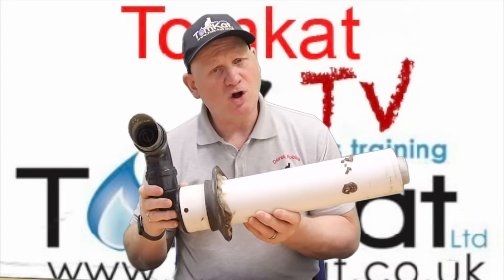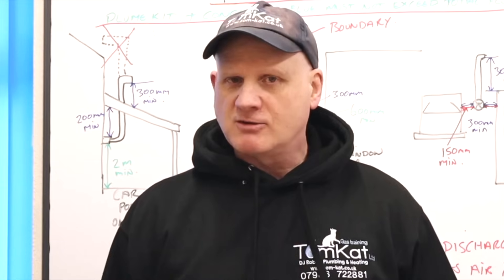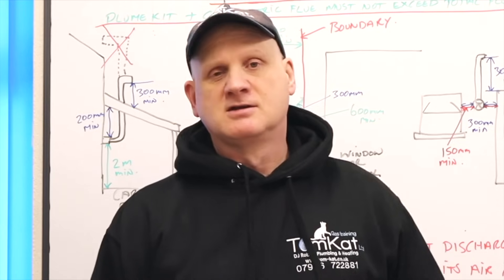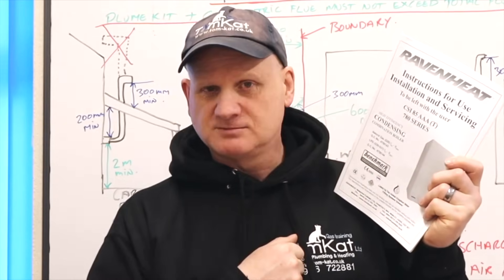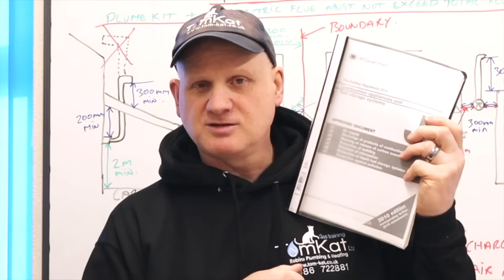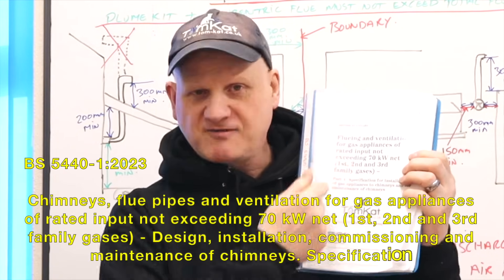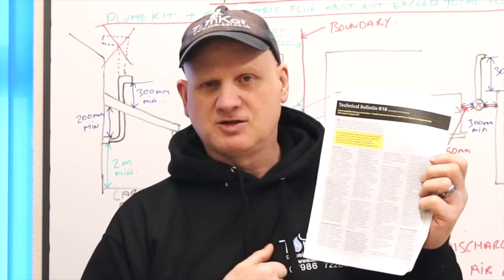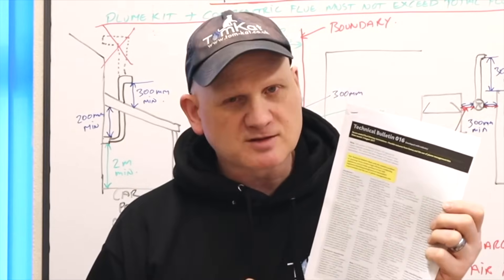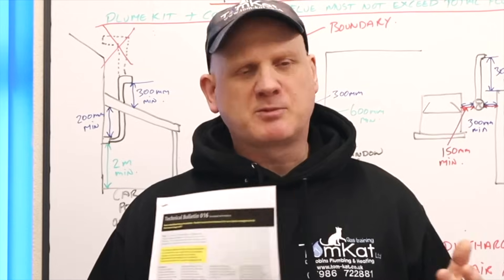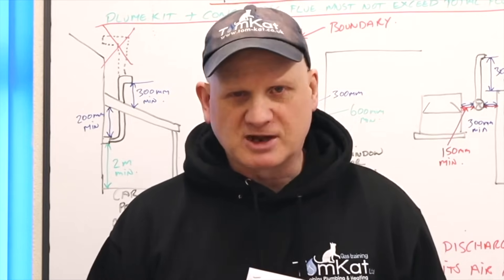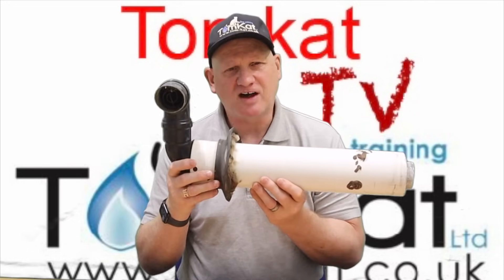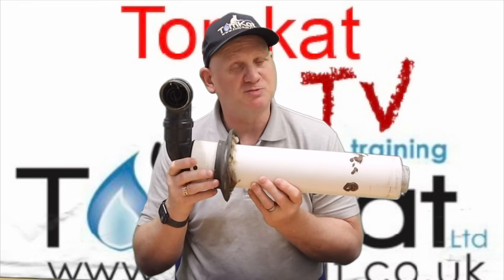Now the documents that might help us out with using plume management kits are, of course, the manufacturer's instructions, J2 of the building regulations, BS 5440 part 1, and finally, Gas Safe Technical Bulletin 016. So they're the documents that can always help you out when you're looking at positionings or installation of plume management kits.